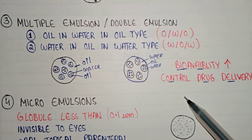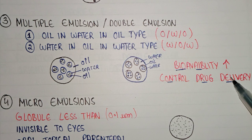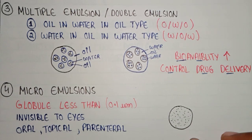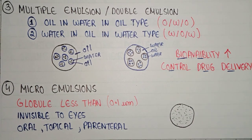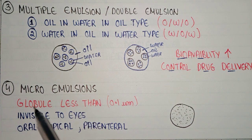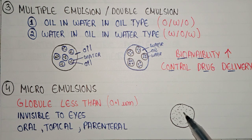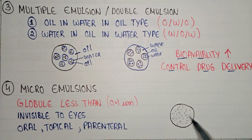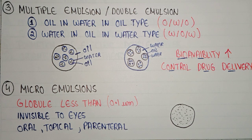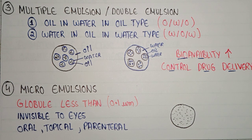The fourth type is micro emulsions. Micro emulsions have globules less than 0.1 micrometer in size, making them invisible to the naked eye. Micro emulsions are used in oral, topical, or parenteral preparations. This covers all the types of emulsions.